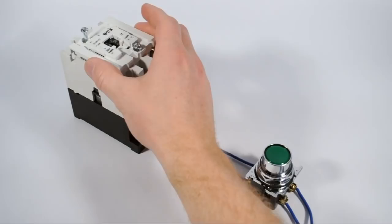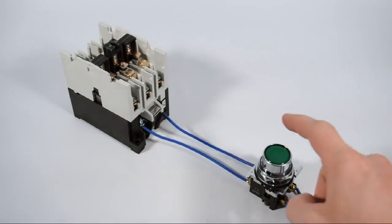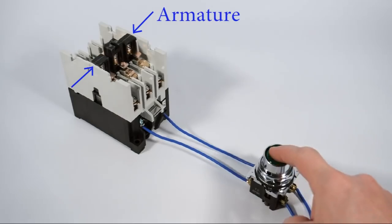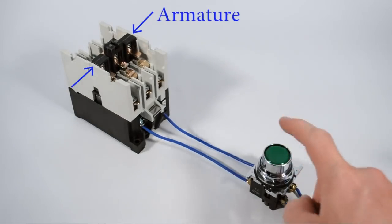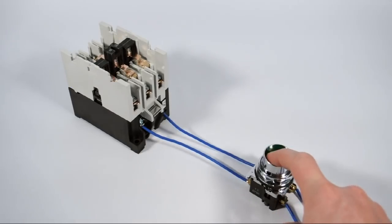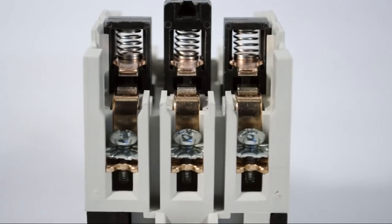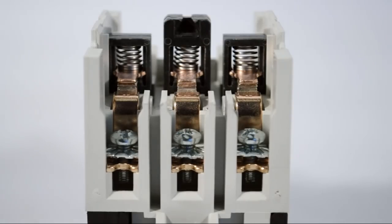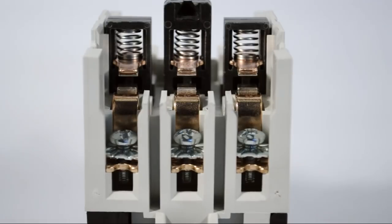Next, I'll remove the top off of the contactor so you can see the electrical contacts inside. Watch the armature and contacts move as I energize and de-energize the coil. Here's a close-up view of the electrical contacts. If the contactor were hooked up to a motor right now, this is where the power would flow through the contactor and out to the motor.